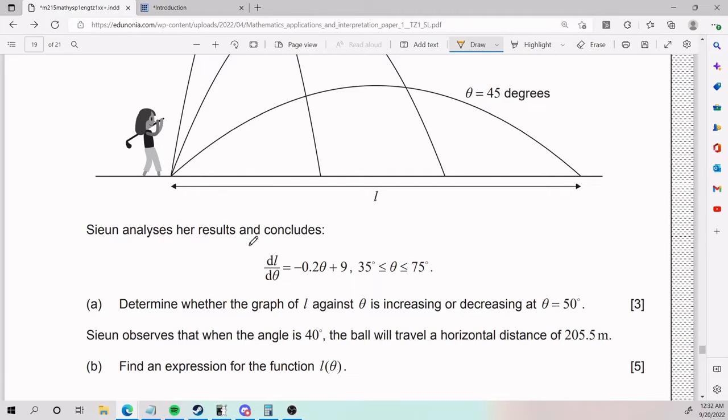So they're giving us the derivative of the angle. Let's see. Determine whether the graph of L against θ is increasing or decreasing at θ equals 50.